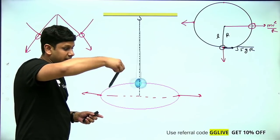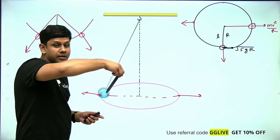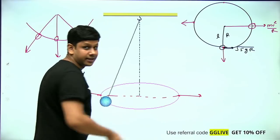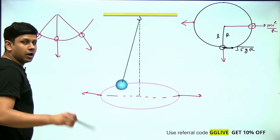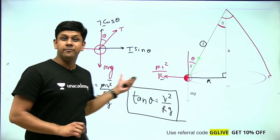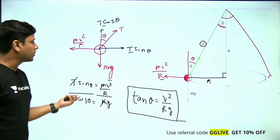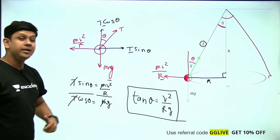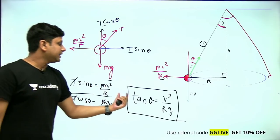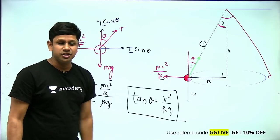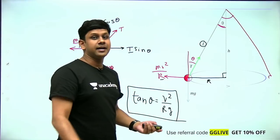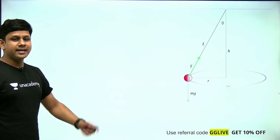So in this case the pendulum moves horizontally in a circle, and centrifugal force acts outward. After taking components of tension and balancing horizontally and vertically, the answer is tan θ = v²/rg. If you're taking notes, pause the video and note this down.